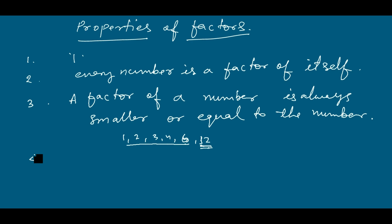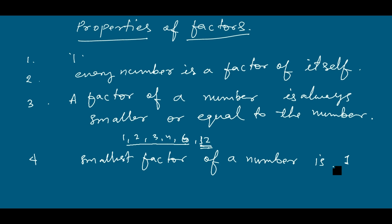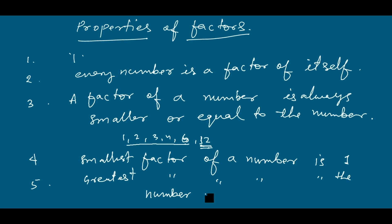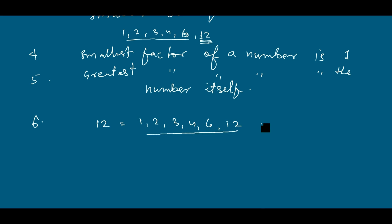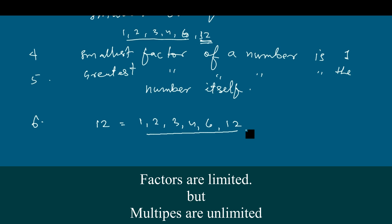Property four — the smallest factor of a number is 1. Property five — the greatest or highest factor of a number is the number itself. Property six — the factors of a number are limited. For example, 12 has exactly 6 factors: 1, 2, 3, 4, 6, and 12. All these numbers are limited. There will not be any further factor beyond 12.